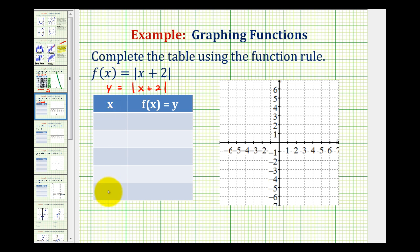What we'll do is select x values, perform substitution, and then find the corresponding function value or y value. Every time we do this, we'll be finding a point on the graph of the given function. When sketching the graph of an absolute value function, it helps to determine which x value makes the absolute value equal to 0, then select values less than and greater than that value. When x is negative 2, we'd have the absolute value of 0, so I'll put negative 2 in the middle of the table.